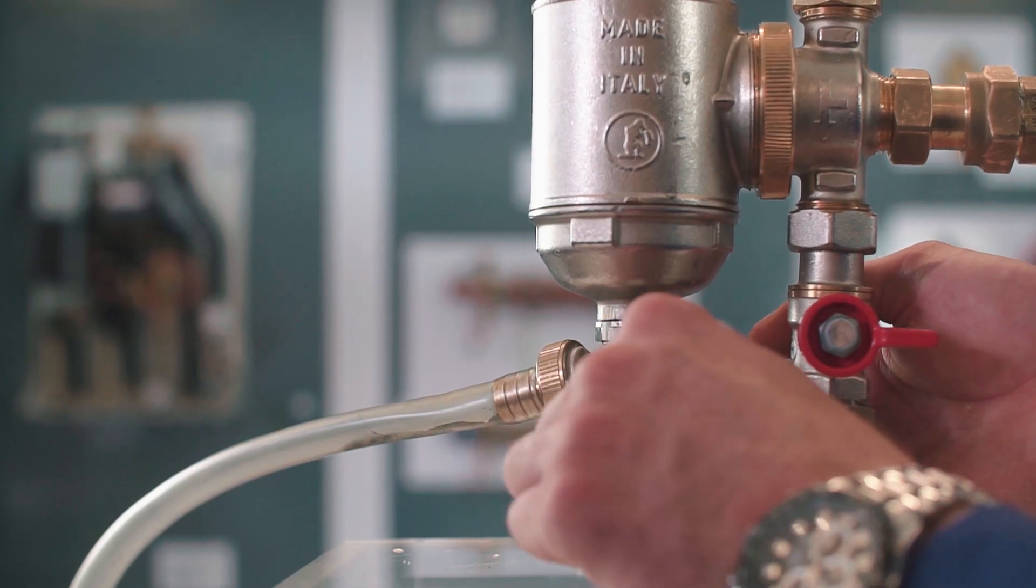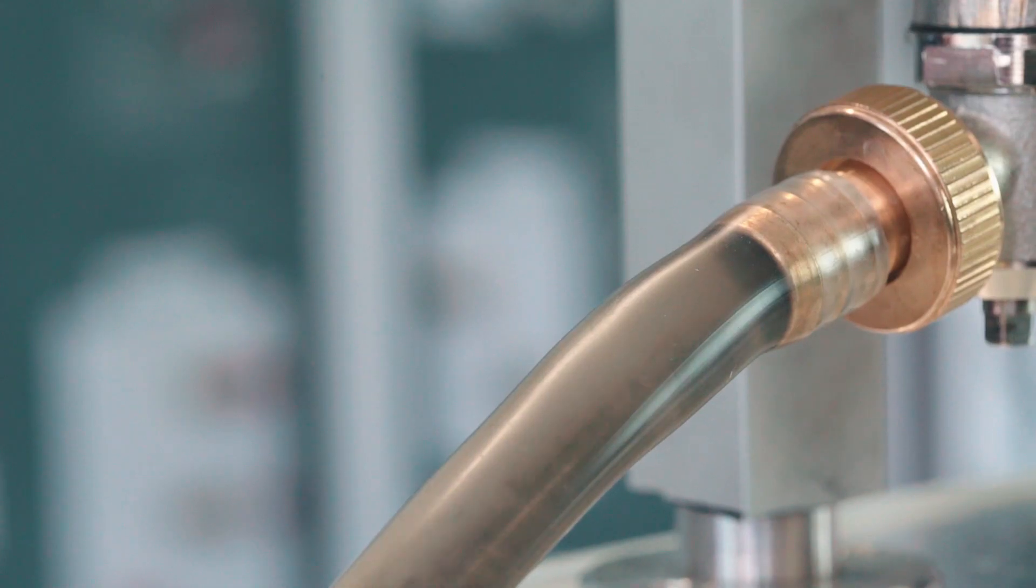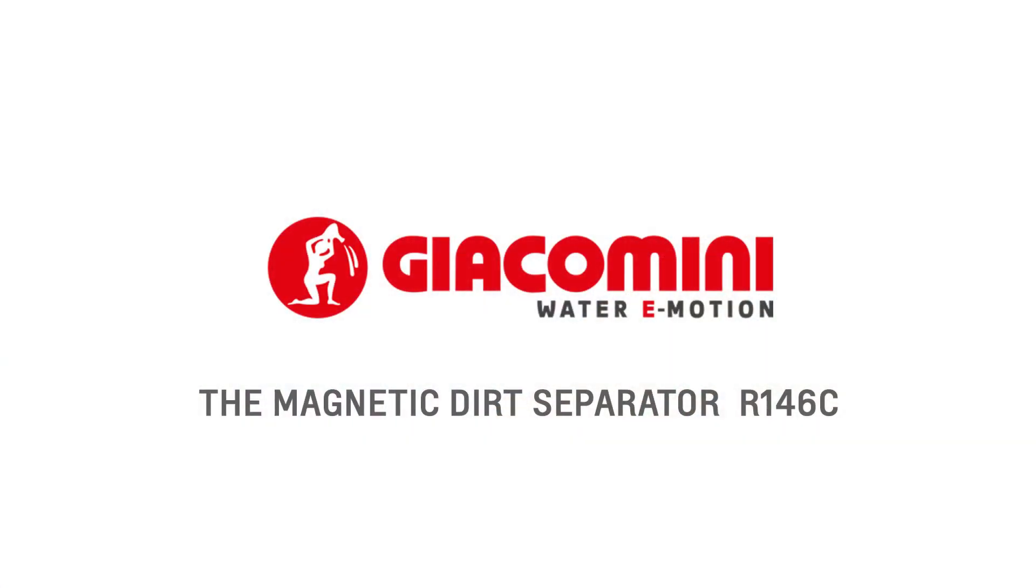A revolving drain valve allows the periodic removal of dirt from the separator.